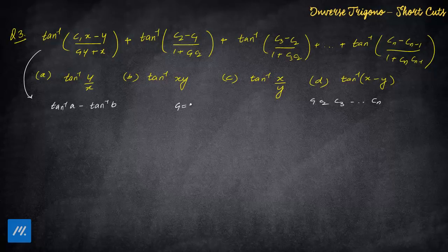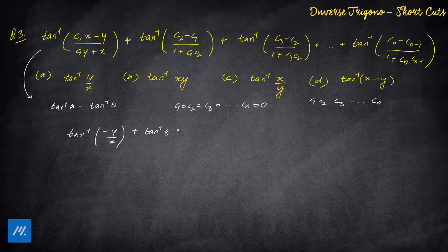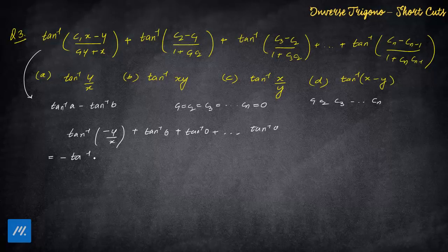So we substitute a value where the question doesn't break down. If all c's are set to zero, the denominator doesn't become zero since tan inverse is involved and we know the angle goes to π/2. With all c's = 0, the series terms become tan inverse (−y/x), and all intermediate terms tan inverse(0) become zero.